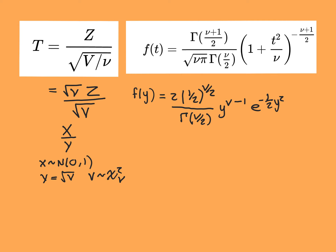Y's PDF is zero for the negative real numbers, and for the positive real numbers it equals this expression. Now what we want to do is consider how X over Y is going to be distributed, which is very almost the T distribution — it's just a constant times this thing.